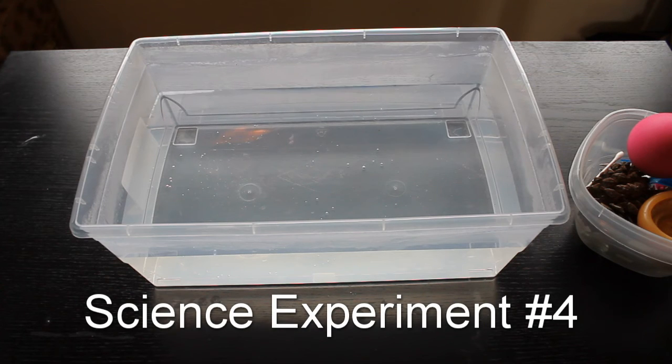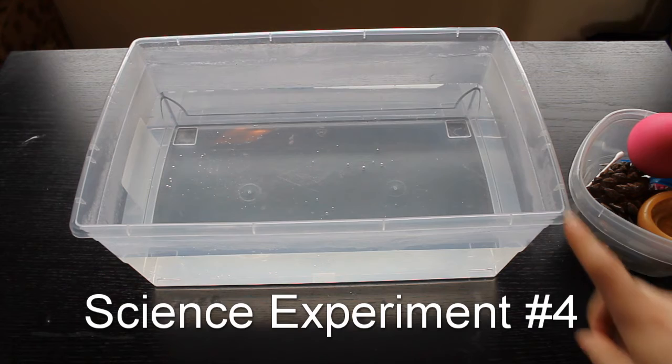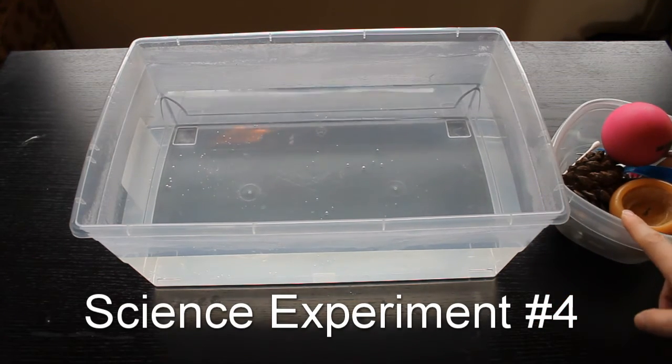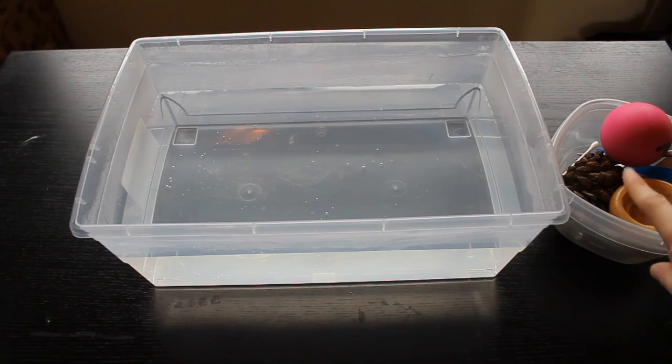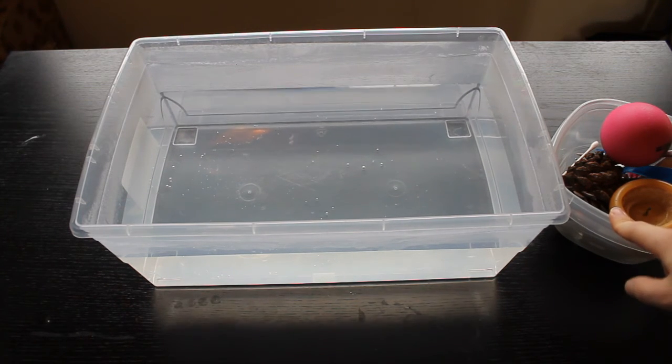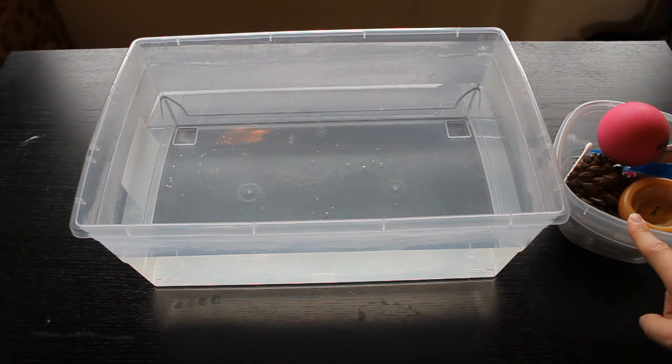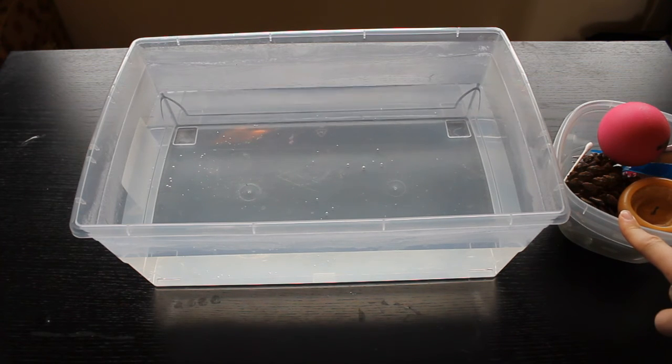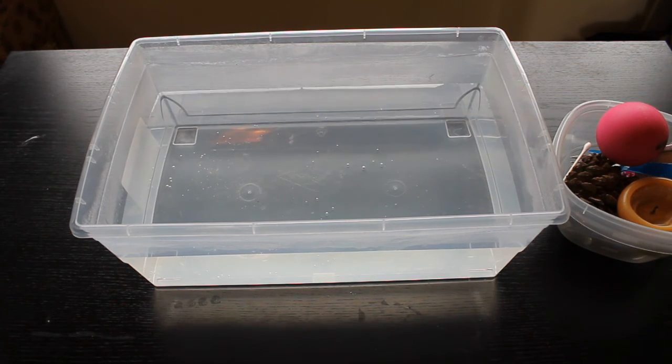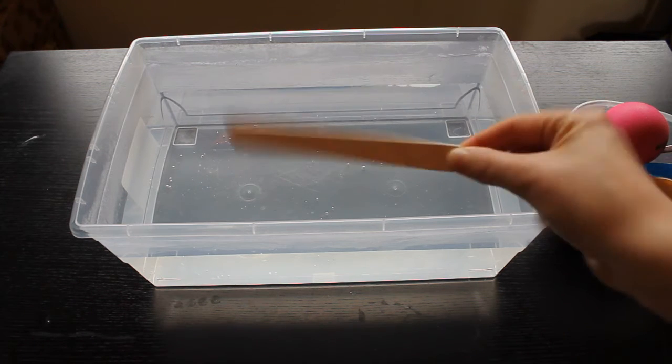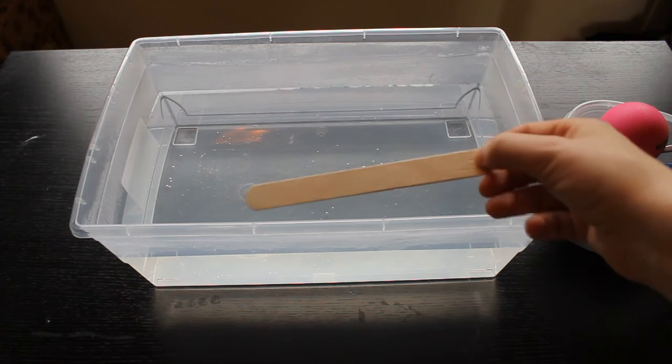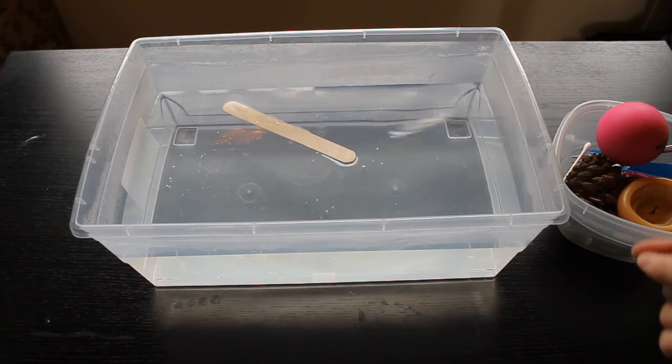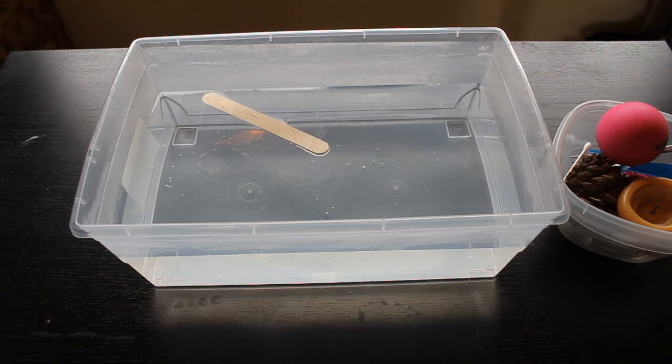This science experiment is super easy because all you're going to need is a container full of water and then some stuff that you find around your house. So I went around my house and I made sure to find stuff that is allowed to go in water. And we're going to see which of this stuff will float in the water and which will sink. So before you put something in the water, I want you to stop and think, is this one going to float or is it going to sink? So for example, let's start with, I have a popsicle stick. What do we think that's going to do? Float or sink? Let's see. And it floated.